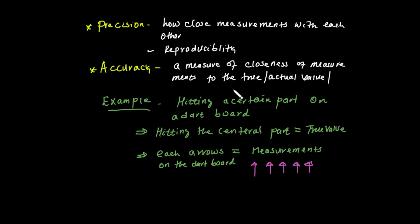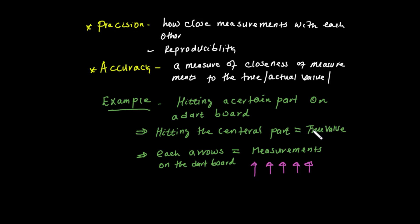For example, consider a dartboard. The dartboard is used to illustrate precision and accuracy. Hitting the central part of the dartboard represents accuracy — the central part is the target. If darts hit a central part, that means they are both precise and accurate.